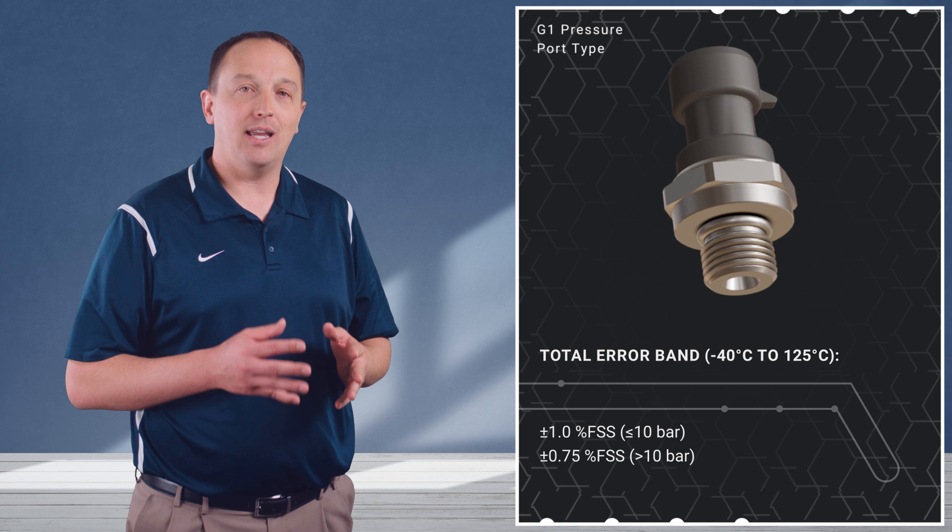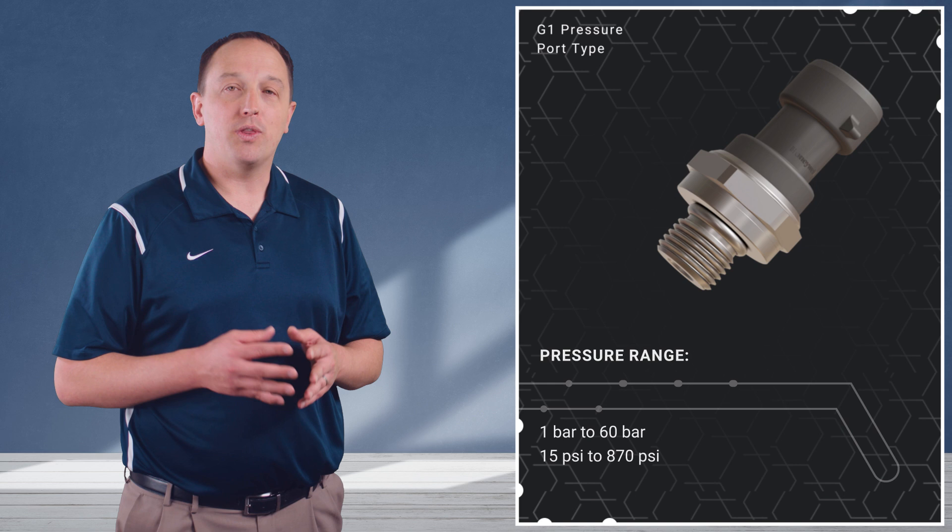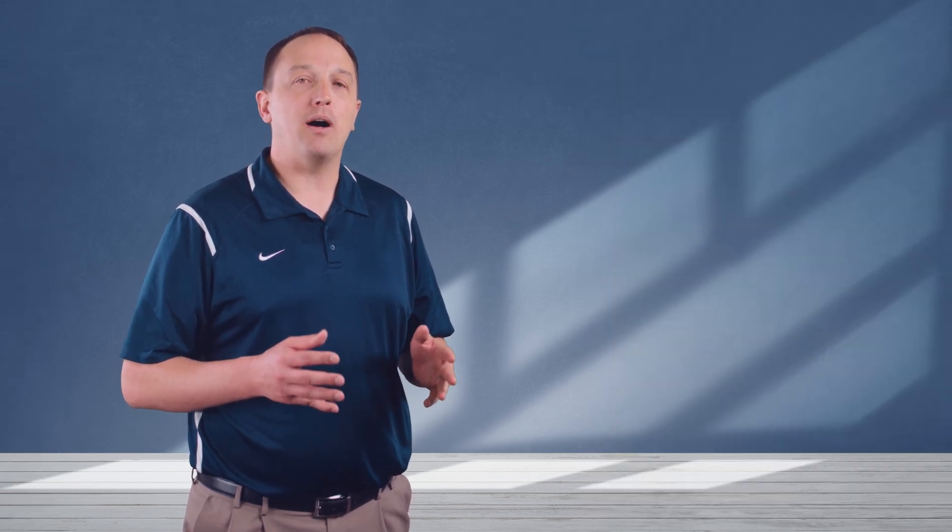The MIP-series features a stainless steel pressure port and is available in pressure ranges from 1 bar to 60 bar with an absolute or sealed gauge reference. You can learn more about Honeywell's MIP-series industrial pressure sensors and other Honeywell sensors now at seger.com.